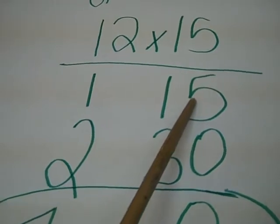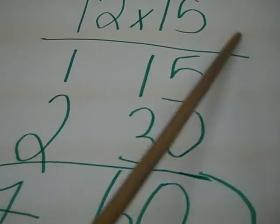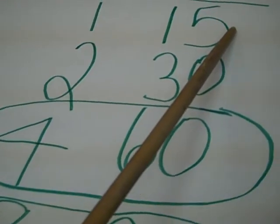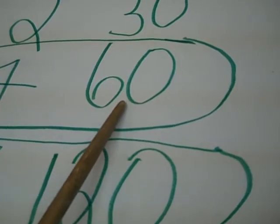So you go to the 15's column, then you put down a 15, then you double it, so it would be 30, then 60, then 120.